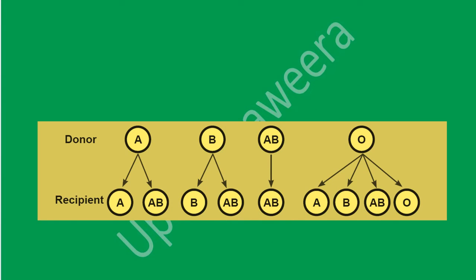By this chart you can understand compatibility. If the donor is A, the recipient will be A or AB. If the donor is B, the recipient will be B or AB. If the donor is AB, the recipient should be AB. If the donor is O, recipients can be A, B, AB, or O.